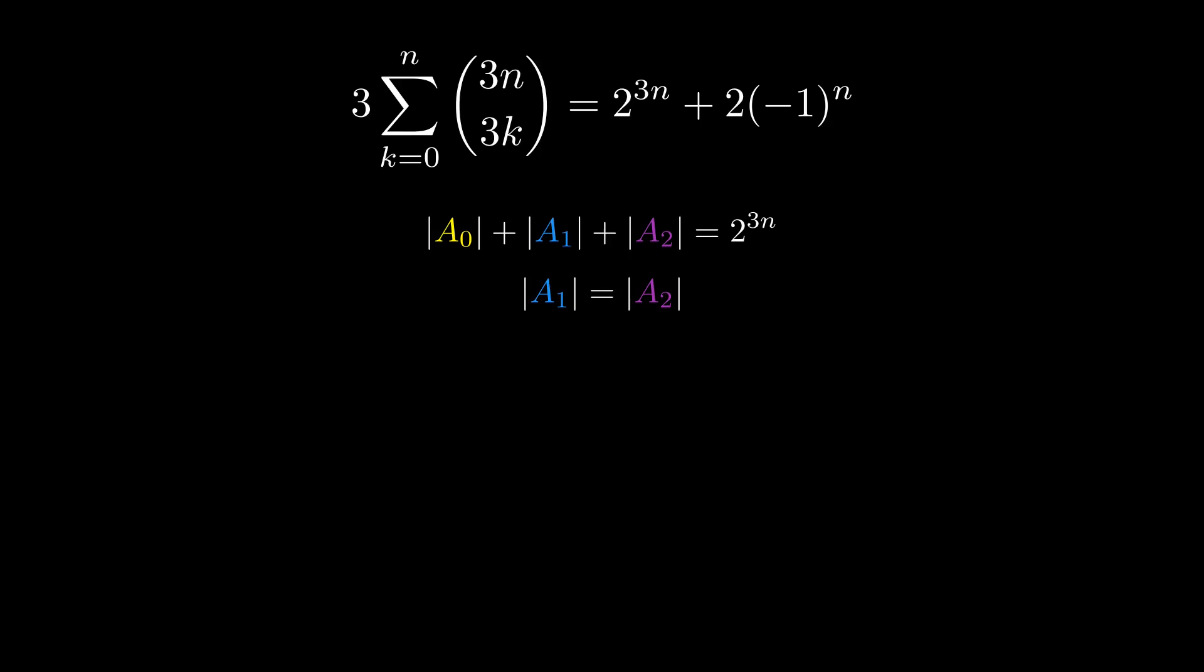It's not immediately obvious that sets A1 and A2 are exactly the same size and only differ by set A0 by a single element each, but that's where our trijection comes in. When we create the trijection, if n is even, set A0 will have an extra element that doesn't get matched with those in A1 or A2. So the size of A0 is the size of A1 plus 1, or the size of A2 plus 1. So 3 times the size of A0 is the size of A0 plus the size of A1 plus 1 plus the size of A2 plus 1, which is 2 to the 3n plus 2, as desired.